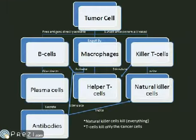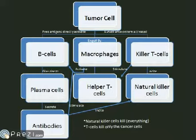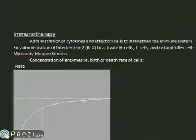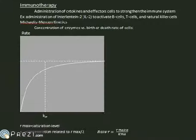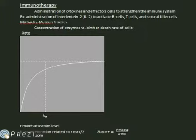Here we see the process in which tumor cells are attacked by T cells and phagocytosis. We have concerns that even though T cells will identify tumor cells, natural killers will kill everything. This treatment is not meant to replace the immune system, but to strengthen it. By adding support to the immune system, we boost the defense against the tumor.